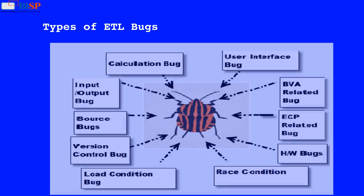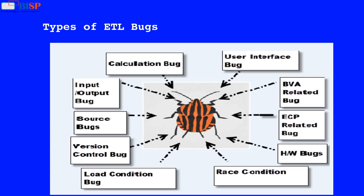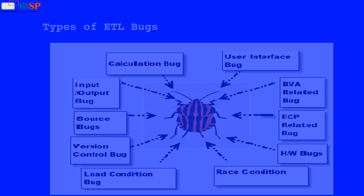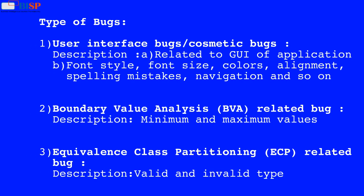The below diagram represents types of ETL bugs. 1. User interface bugs, also known as cosmetic bugs. Description: A. Related to the GUI of the application. B. Font style, font size, colors, alignment, spelling mistakes, navigation, and so on.